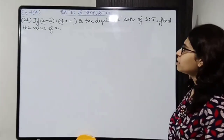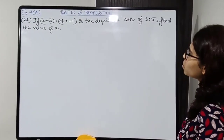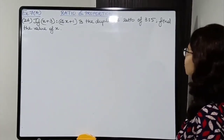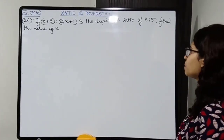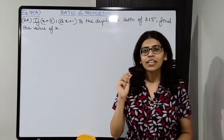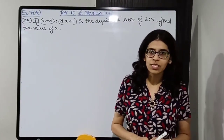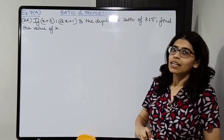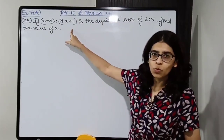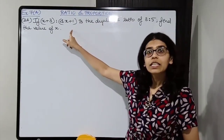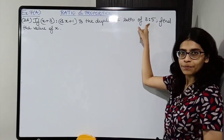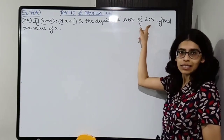If x plus 3 is to 4x plus 1 is the duplicate ratio of 3 is to 5, find the value of x. Read the question very carefully — they have told that x plus 3 is to 4x plus 1 is the duplicate ratio of this. So we have to duplicate this.